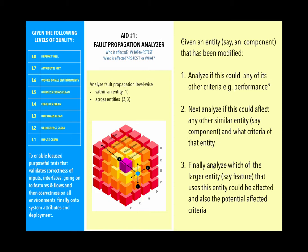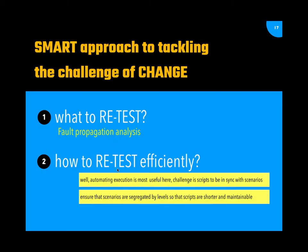Aid number one, Fault Propagation Analysis, assesses fault propagation level-wise within an entity, across entities, and across planes. Now let's go to the second challenge: how do we retest efficiently? Automating execution is most useful here. The only challenge is that scripts need to be in sync with the scenarios, because as software changes, scenarios might get added, modified, or updated. HBT recommends ensuring that scenarios are segregated by levels so that scripts are shorter and more maintainable.